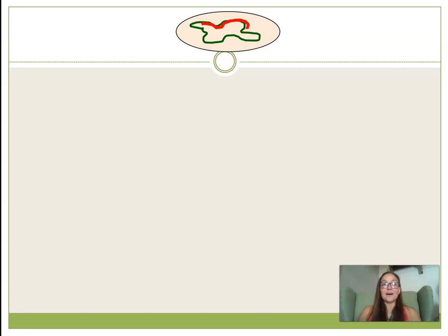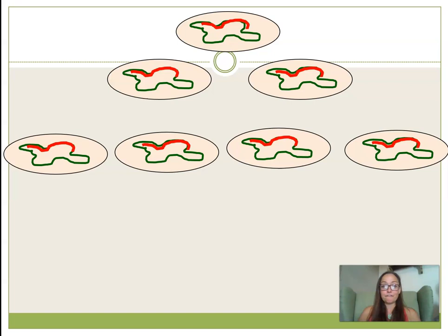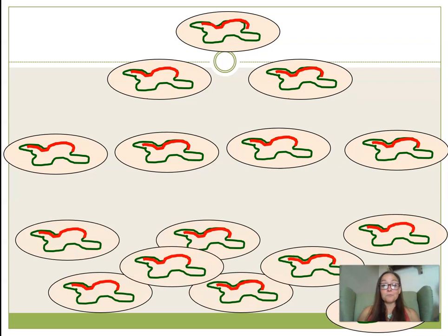The viral DNA is incorporated within the circular chromosome but stays dormant — the genes are not being expressed, ribosomes are not attaching, and no viral proteins are being produced. As the bacterium goes through binary fission and reproduces, it makes copies of its own DNA during DNA replication, but at the same time it's also replicating that section of viral DNA as well.